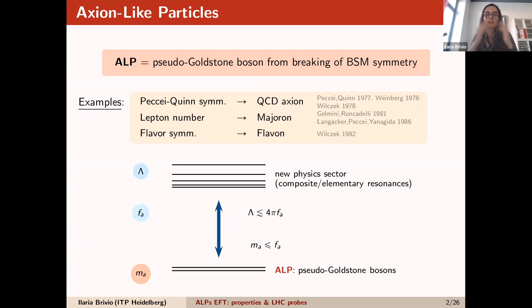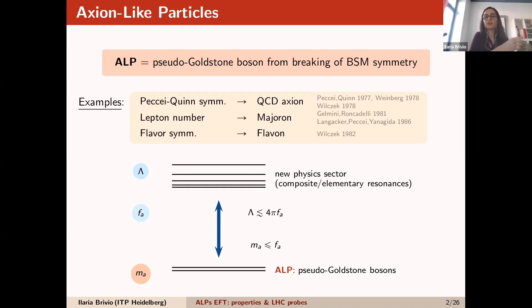Axion-like particles are defined in general as the pseudo-Goldstone bosons that come from the spontaneous breaking of a BSM symmetry. There are an infinite number of examples. The main one that gives the name is the Peccei-Quinn symmetry, which when broken produces the QCD axion that solves the CP problem. But one could also think of other things: if you have a spontaneous breaking of lepton number, you have the Majoron; if you have the spontaneous breaking of a flavor symmetry, you can have the Flavon. All of these are ALPs. There are also examples in string theory and composite scenarios.